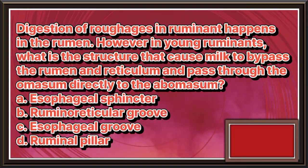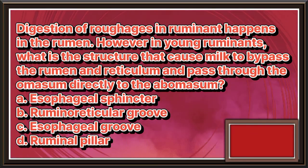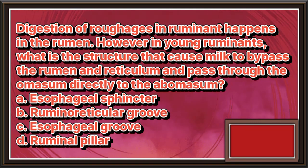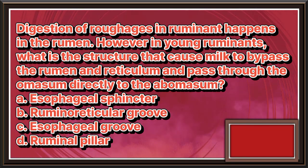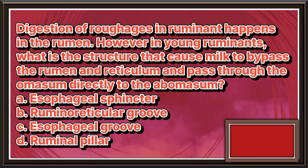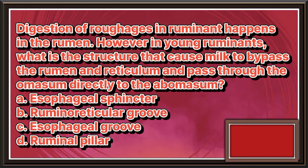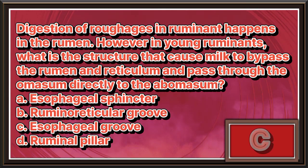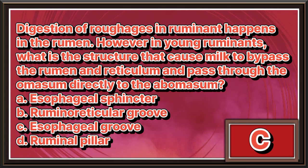Digestion of roughages in ruminants happens in the rumen. However, in young ruminants, what is the structure that causes milk to bypass the rumen and reticulum and pass through the omasum directly to the abomasum? a. Esophageal sphincter. b. Rumeno-reticular groove. c. Esophageal groove. d. Ruminal pillar. The answer is letter c.